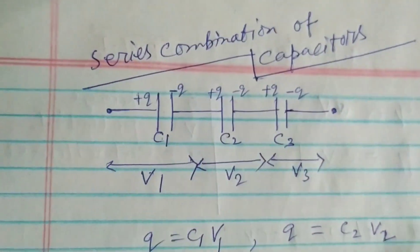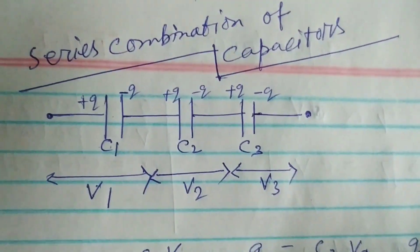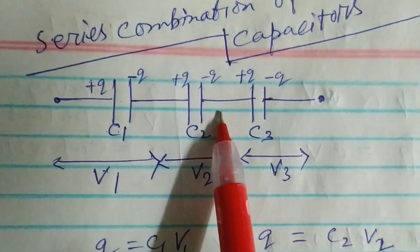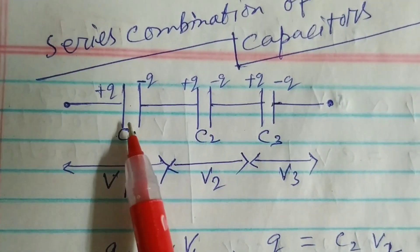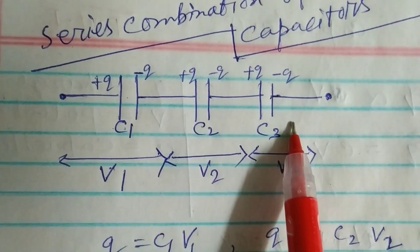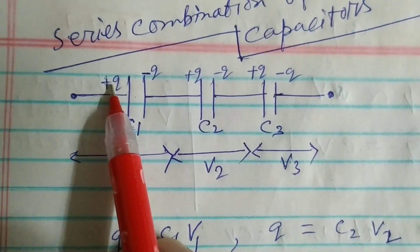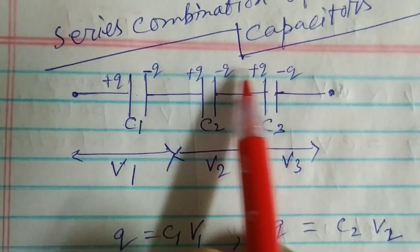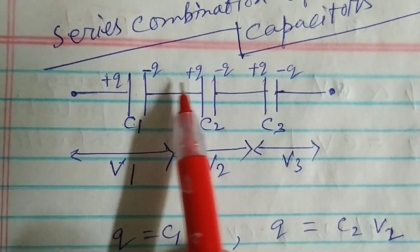Now we will consider series combination of capacitors. I have taken three capacitors C1 having capacitance C1, C2, C3. Plus Q charge is given and then by induction the charges are like this.